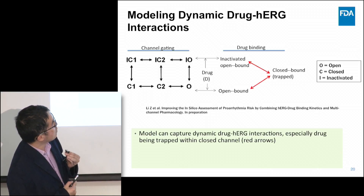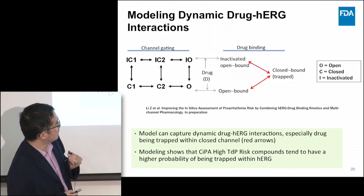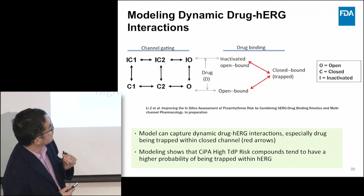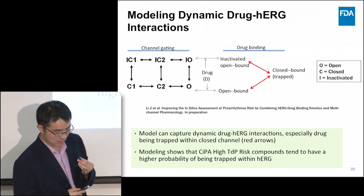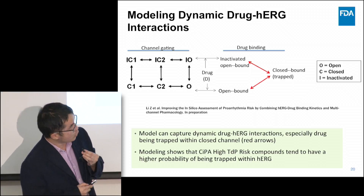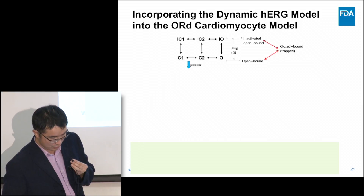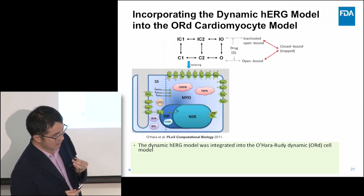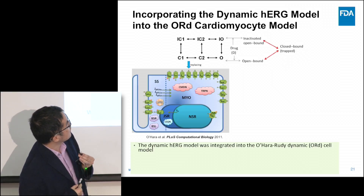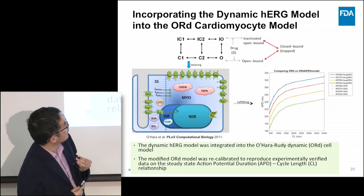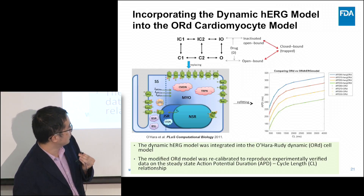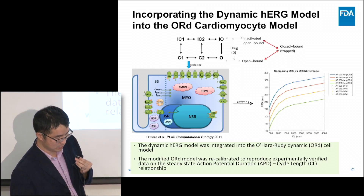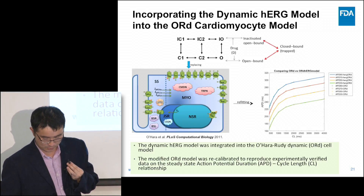Using this novel modeling approach, we found that many SEPA high TdP risk compounds tend to have a higher probability of being trapped within the closed bound or trapped state — a feature missed by many published models. We then integrated this hERG drug binding model into the Ohara-Rudy cardiomyocyte model. Because this integration may disrupt system behavior, we refitted the modified cardiomyocyte model to human data to ensure it still reproduces experimentally verified steady-state action potential duration APD versus cycle length CL relationships and human myocyte behavior.